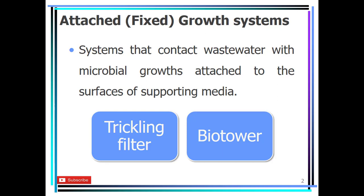To review: the attached growth system consists of systems that contact wastewater with microbial growths attached to the surfaces of supporting media. The bacteria will be attached to the surface of this media, wastewater will be contacted with it, and we have two main techniques: the trickling filter and the bio tower.